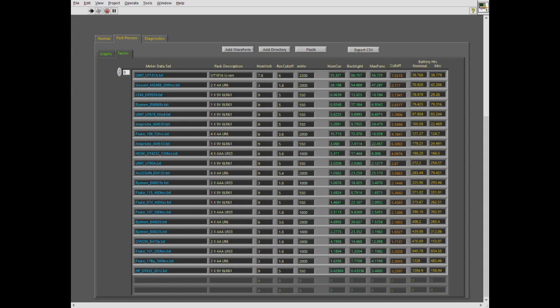By far the worst two meters that I've got are the Unity UT181A—of course, that's using a LiPo pack—second worst is the Gossen. Again, that meter only has two double-A batteries in it.